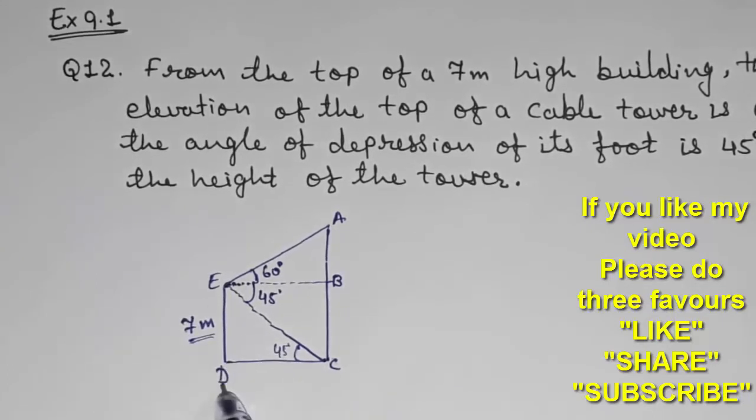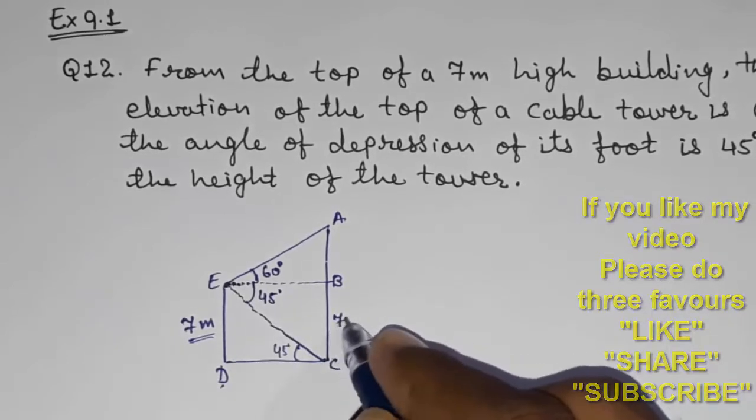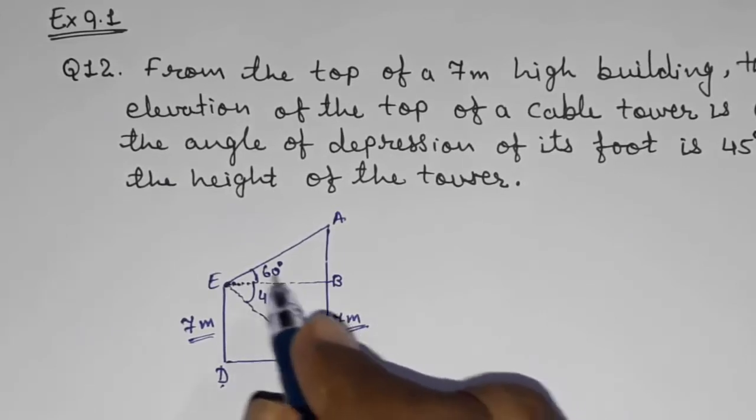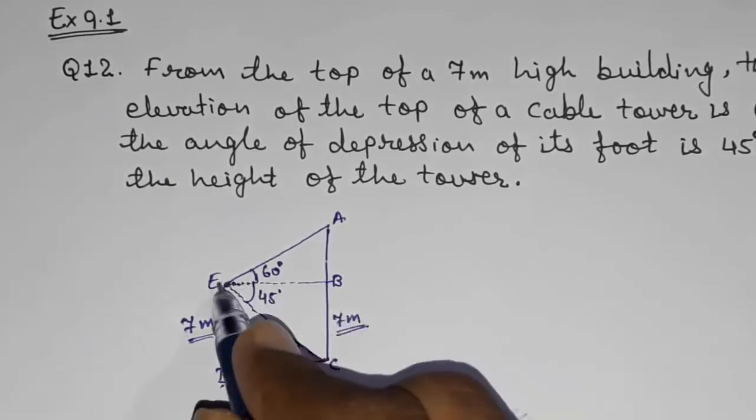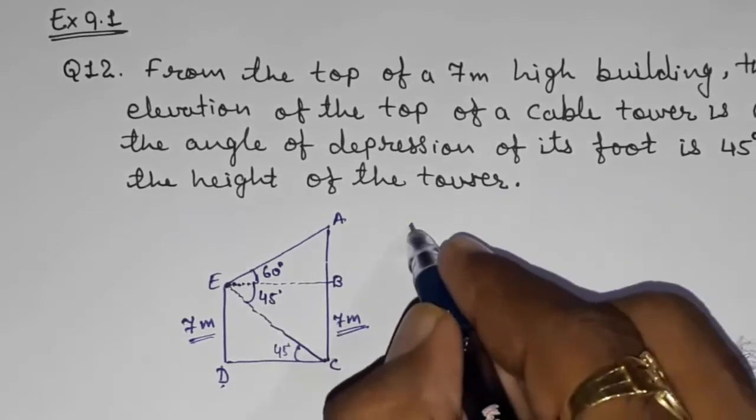Now we know that ED is 7 meters. Therefore, and this is parallel to this, so BC also 7 meters. Now with the help of this 7 meters, we are going to find out EB. And with the help of this EB, we are going to find out AB. Look here how it is.